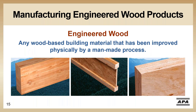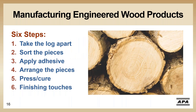Let's take a few minutes to consider the manufacturing of engineered wood products and how it maximizes the structural value of our timber resource. Engineered wood is any wood-based building material that has been improved physically through a man-made process. Generally when manufacturing engineered wood there are six steps: we start with a log, take it apart, sort the pieces, apply adhesives, arrange the pieces in a specific fashion, press and allow to cure, and then add any finishing touches.